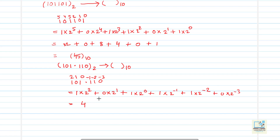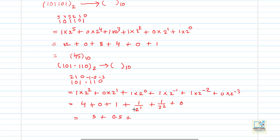The first term: 2 to the power 2 is 4. The next term is 0. Plus the next term: 2 to the power 0 is 1. Now in the fractional part, 2 to the power minus 1 can be written as 1 by 2 to the power 1, and 2 to the power minus 2 can be written as 1 by 2 to the power 2. The next term is 0. So in the integral part, 4 plus 1 gives us 5. The first fractional term is 1 by 2, which is 0.5, and the next is 1 by 4, which is 0.25. Adding them all gives 5.75 base 10.